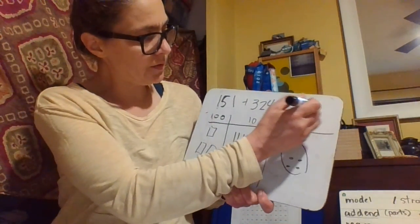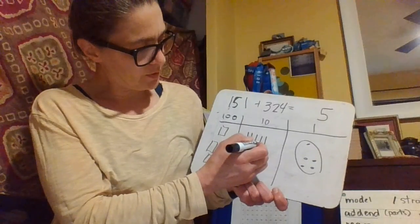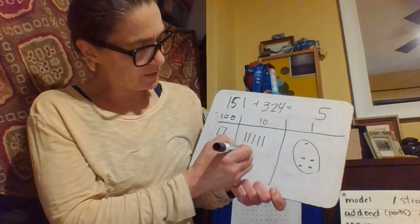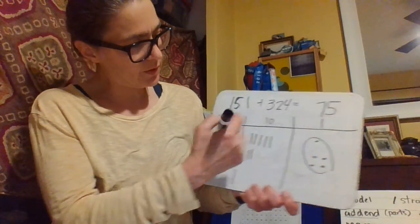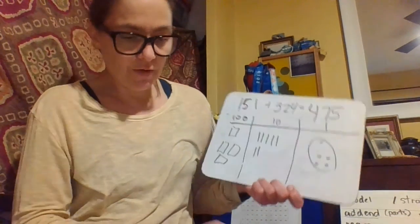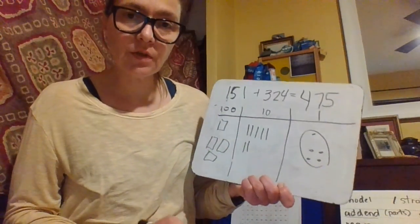And then I add it up. I have five ones here. I have 10, 20, 30, 40, 50, 60, 70. I have 75. And then I have 100, 200, 300, 400. 475. And that's three on page 433.